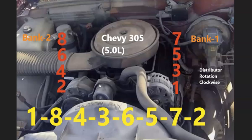The firing order for the Chevy 305 engine is going to be one, eight, four, three, six, five, seven, two. And the distributor is going to rotate clockwise.